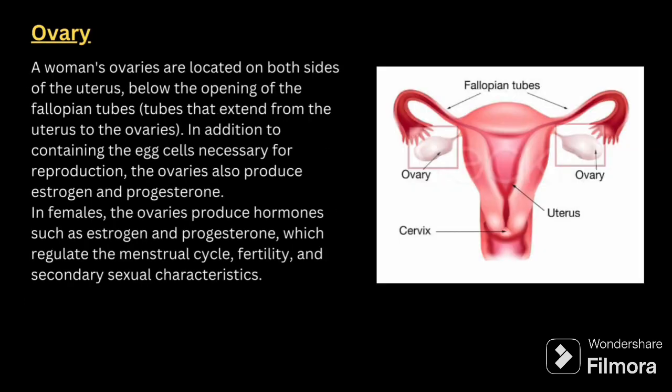Next, we have to talk about the ovary. Women's ovaries are located on both sides of the uterus, below the opening of the fallopian tubes — the tubes that extend from the uterus to the ovaries. In addition to containing the egg cells necessary for reproduction, the ovaries also produce estrogen and progesterone, which regulate the menstrual cycle, fertility and secondary sexual characteristics.